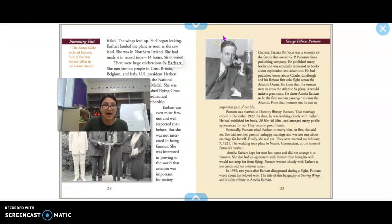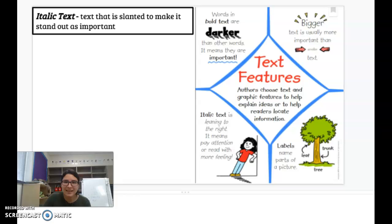Let's go ahead and go back to our poster and go over the poster one more time and then talk about biography. All right, text features. I hope you enjoyed going over these different text features. Like I said, I know bold text, bigger text, and labels. We've gone over before, but today our new one is what? Italic text.